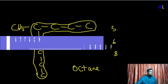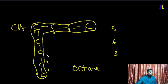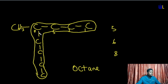Rule three says we should allocate locants starting from the end closest to a substituent. Counting from one end reaches the substituent at position four; counting from the other end reaches it at position five. Since position four is closer, we start from that end and allocate locants one through eight along the parent chain, starting from the end closest to the substituent.